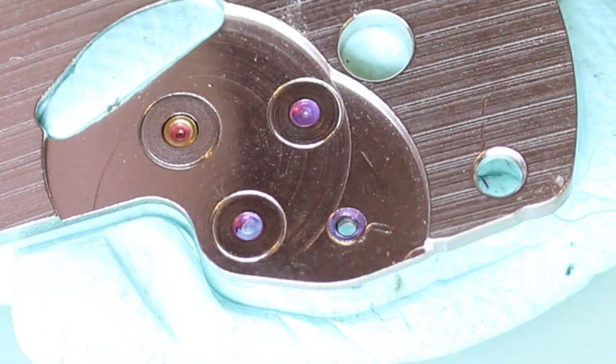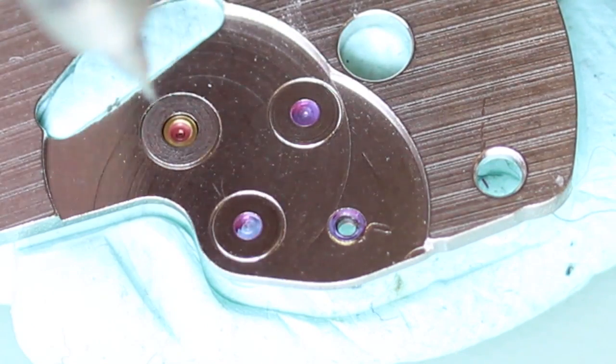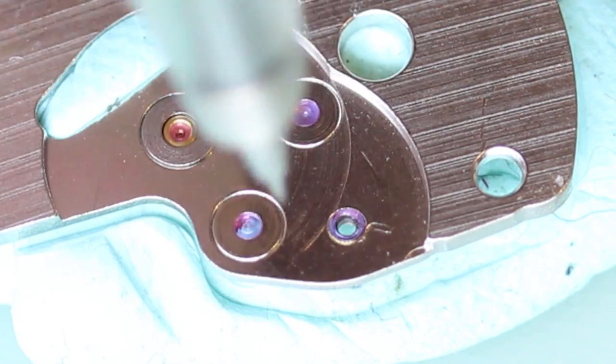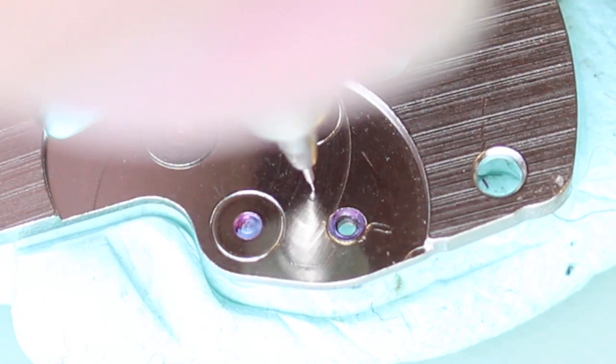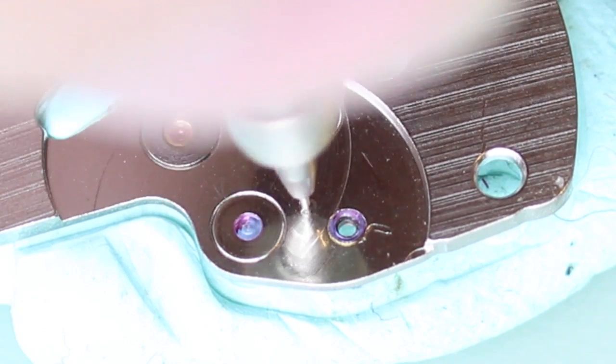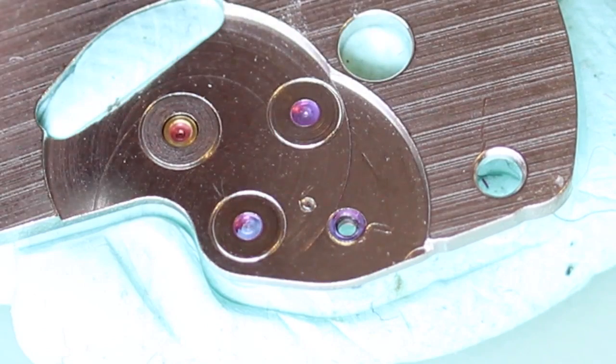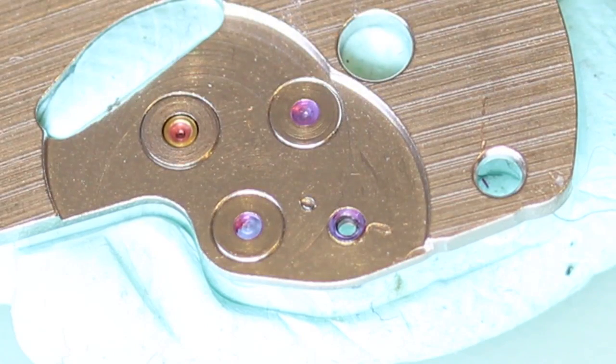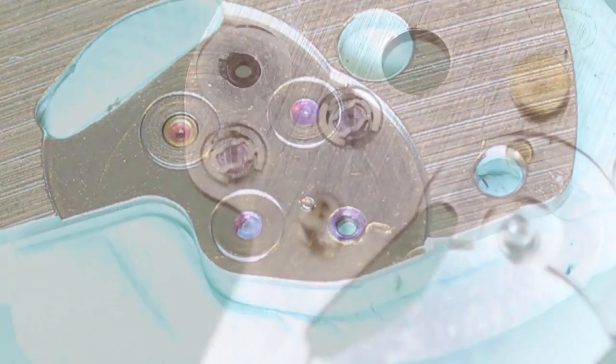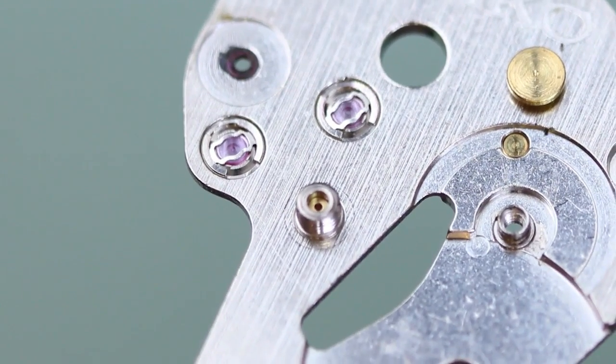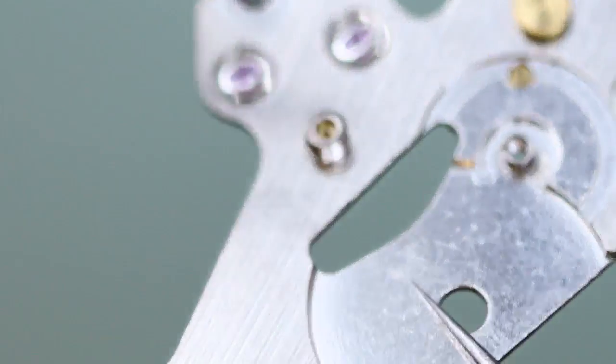And as the needle comes out again, it pushes the oil through the hole, the pivot hole. You can see this is about the amount of oil that comes out, which is just about the right amount. And that's it. It's as easy as that. It wasn't that easy.